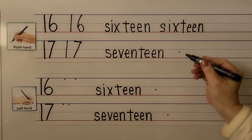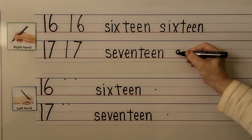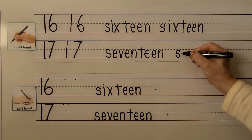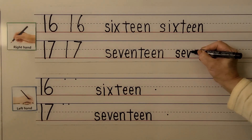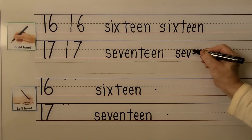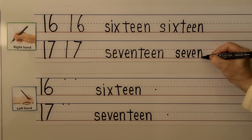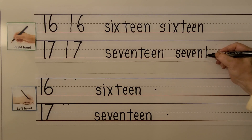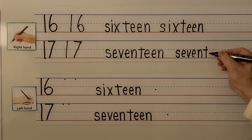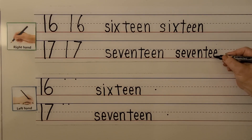We can write the word 17. We start our S just like we did with 16, then make an E, V, E. And we do the teen part because they say teen: we make a T, E, another E, and an N. 17.